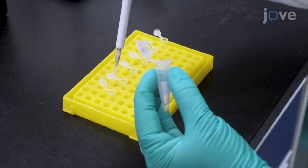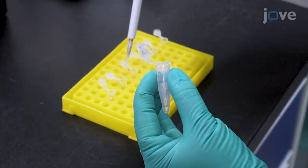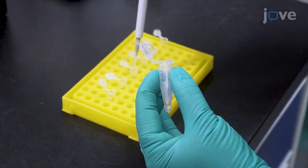First, use the DNA supernatant from one well as PCR template to optimize the annealing temperature. Add reagents and 1 microliter of DNA supernatant into each PCR well.